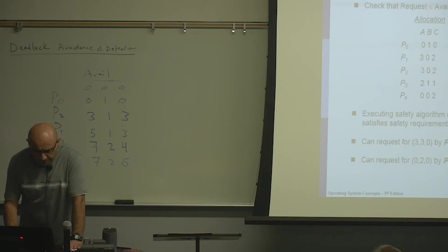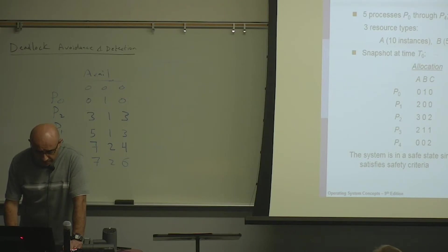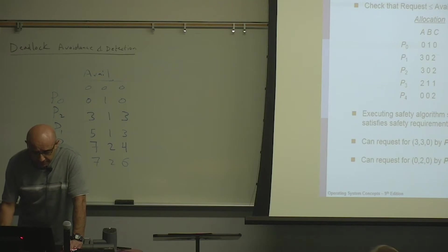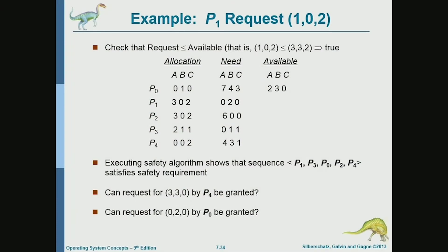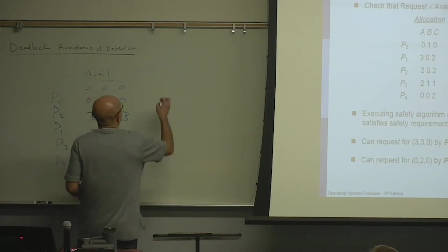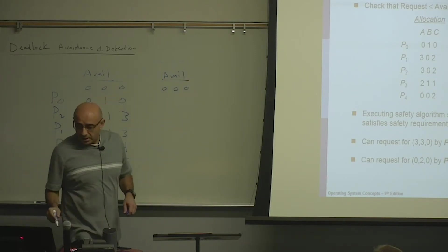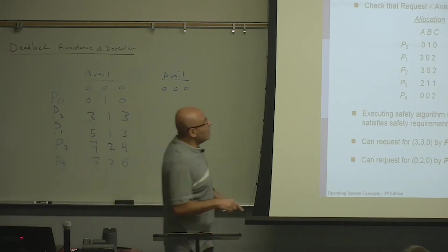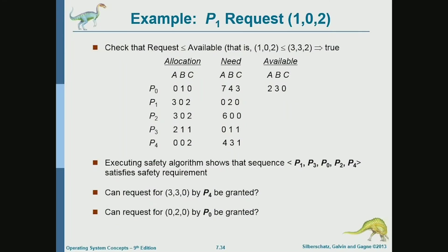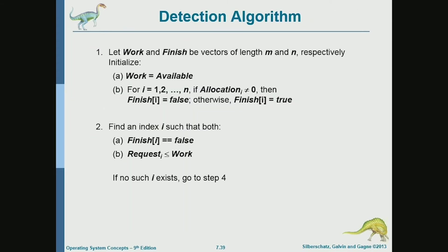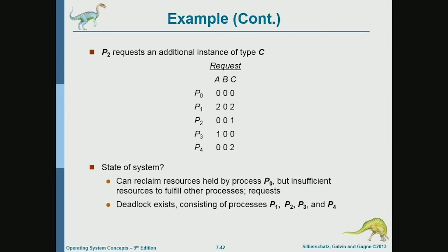Now what if process one requests one, zero, two? I went back to the avoidance example because I wanted to show the code. Now if P2 requests an additional instance of C, P2 is no longer requesting zero, zero, zero — it's requesting zero, zero, one. Can we find a safe sequence now?